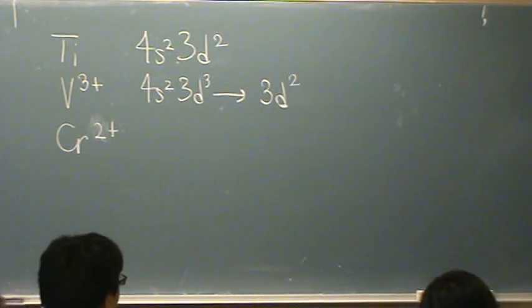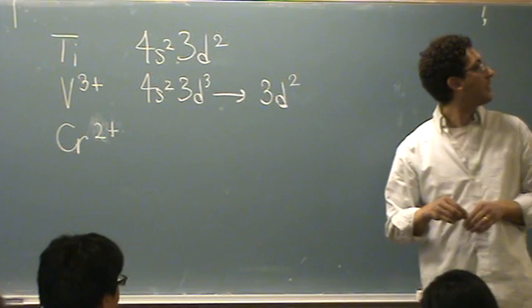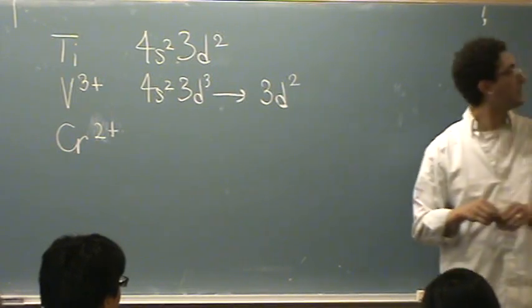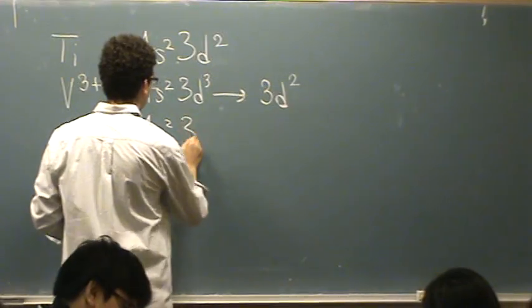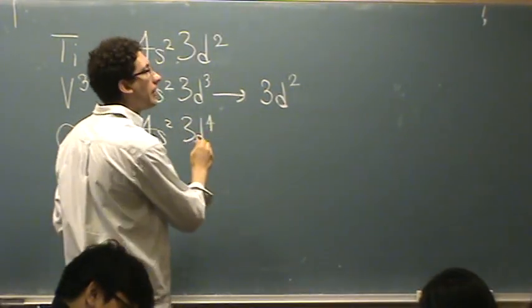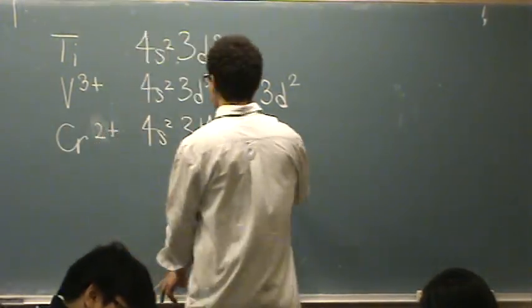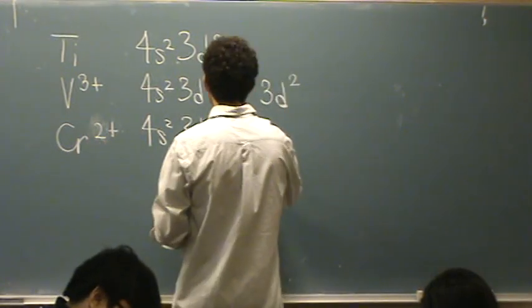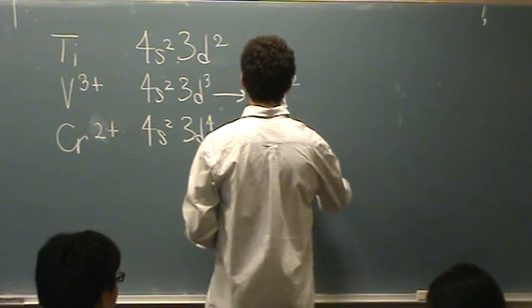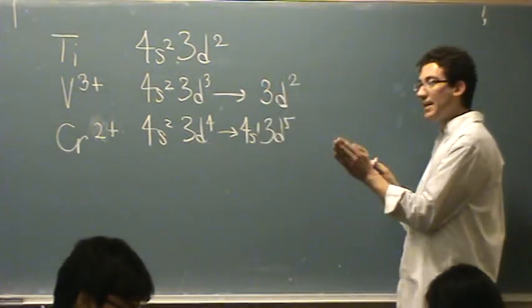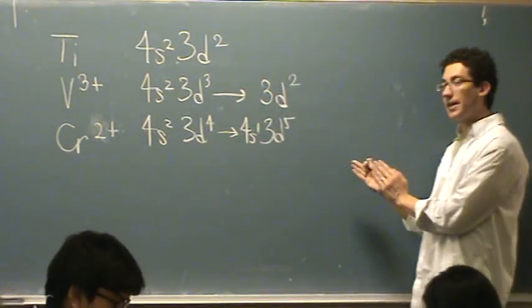Chromium, neutral, is in the sixth column. So it's 4s2 3d4. And since it's in the fourth column of the transition metals, you should really write 4s1 3d5. So the fourth and ninth column of the transition metals, you write like this.